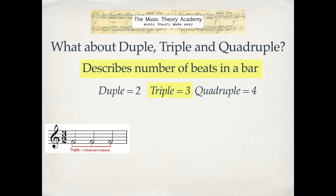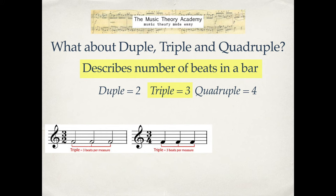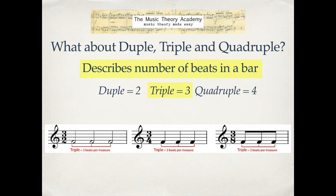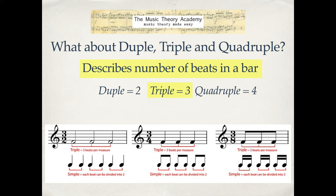Now let's look at triple — there are three beats in a bar, three beats in every measure. Here's an example with three crotchet beats or three quarter note beats per bar. And three quavers or three eighth notes in another example — three beats per measure. It's triple time, but it's also simple time because each of those beats can be divided into two.